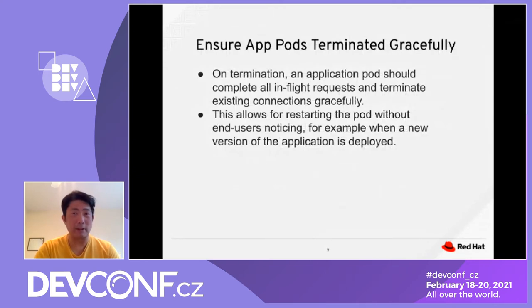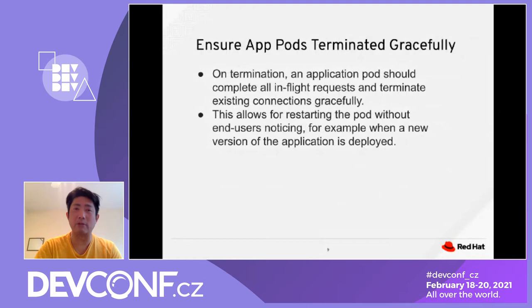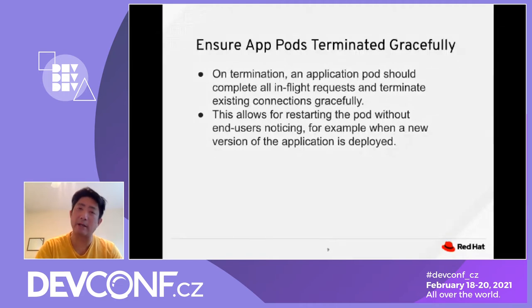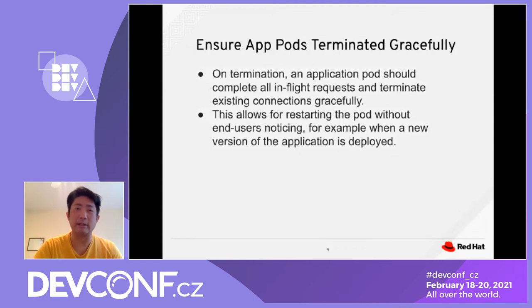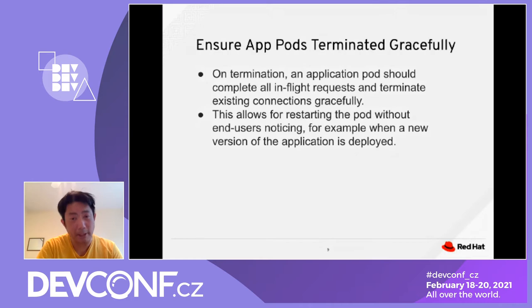Ensure your application pod terminates gracefully when it needs to be terminated. The application should complete all in-flight requests and terminate according to process, closing all existing connections gracefully so you don't have any dangling open connections. This helps you maintain the application without running out of memory and without dangling connections on restart. It also helps you keep track of when a newer version of the application is deployed.